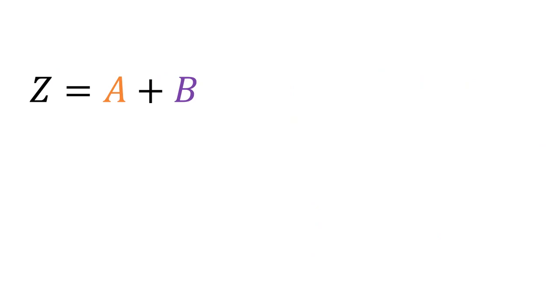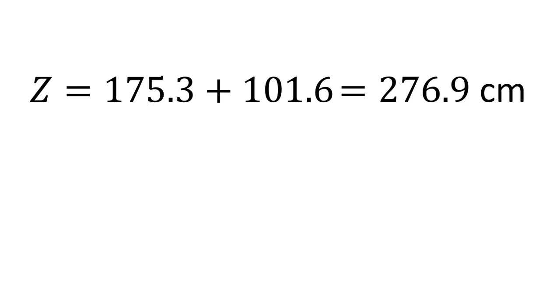So if we look at this, Z equals A plus B, so we can put the numbers into this and get a value. And we refer to this as a linear combination. So we say delta Z squared equals delta A squared plus delta B squared.